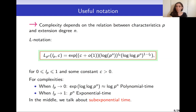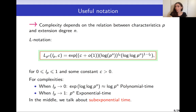What is interesting about complexities expressed using this L notation is that if LP tends to 0, the formula goes to some log of Pn, corresponding to a polynomial time algorithm. On the other hand, if LP tends to 1, we end up with Pn, which corresponds to an exponential time algorithm. So this LP varying between 0 and 1 defines what is called a sub-exponential time algorithm — a complexity not as bad as exponential but not as good as polynomial. Most complexities we will see are expressed using this L notation where L is a constant between 0 and 1.